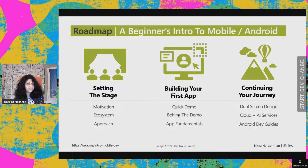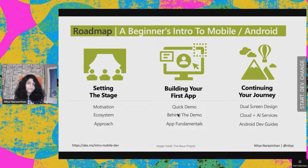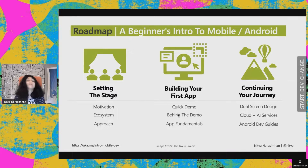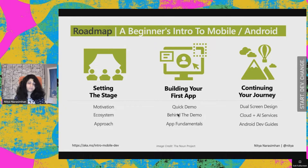The roadmap for this talk is in three parts. First, we're going to set the stage — why should you care about mobile? Second, and we'll spend the bulk of our time here, we're going to talk about how you can get started building your very first Android app, something really simple. You'll learn to get your development environment set up and understand what the workflow looks like. Last, I'll share some resources to continue your journey.